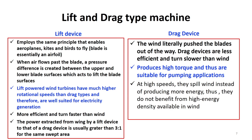The power extracted from wind by a lift device compared to that of a drag device is usually greater than 3 to 1 for the same swept area. In case of a drag device, the wind literally pushes the blades out of the way. Drag devices are less efficient and turn slower than wind. At high speeds, drag devices spill wind instead of producing more energy, so they do not benefit from the high energy density available in wind. In general, lift devices are mostly used for power generation applications and drag devices are mostly used for water lifting applications because of the high torque associated with them.